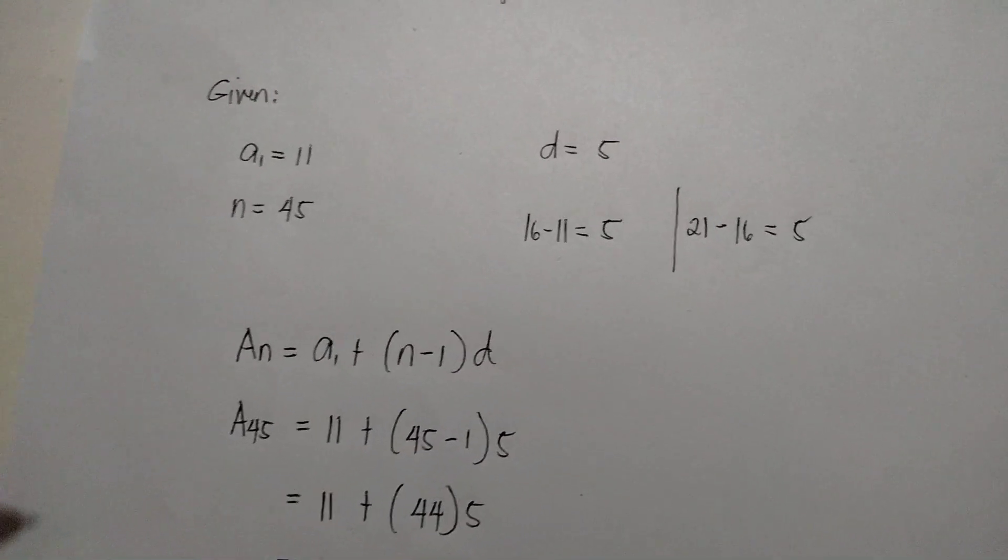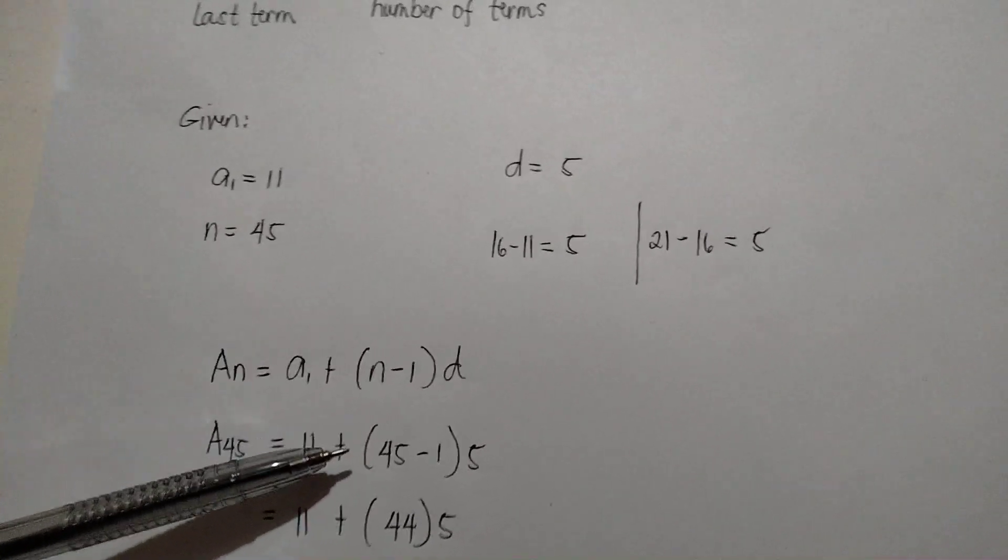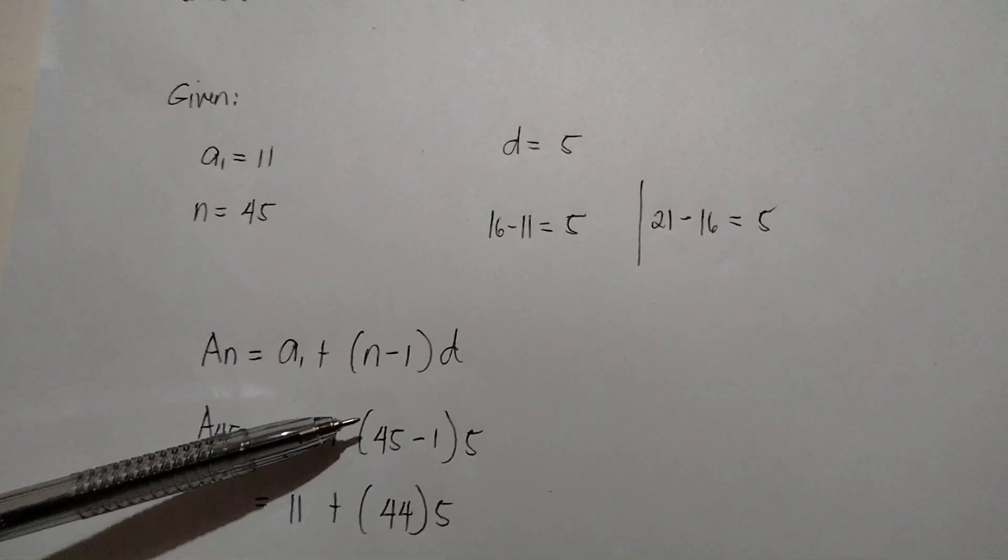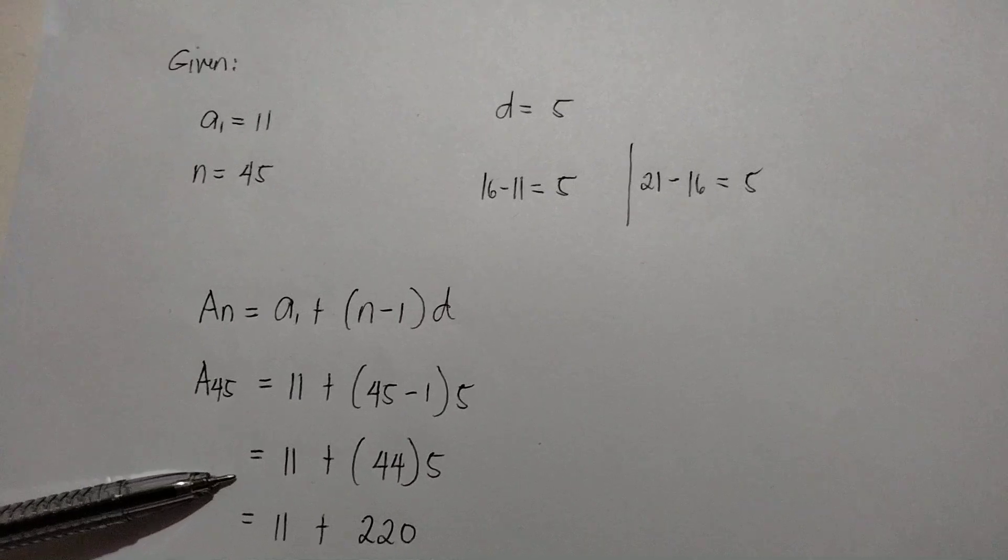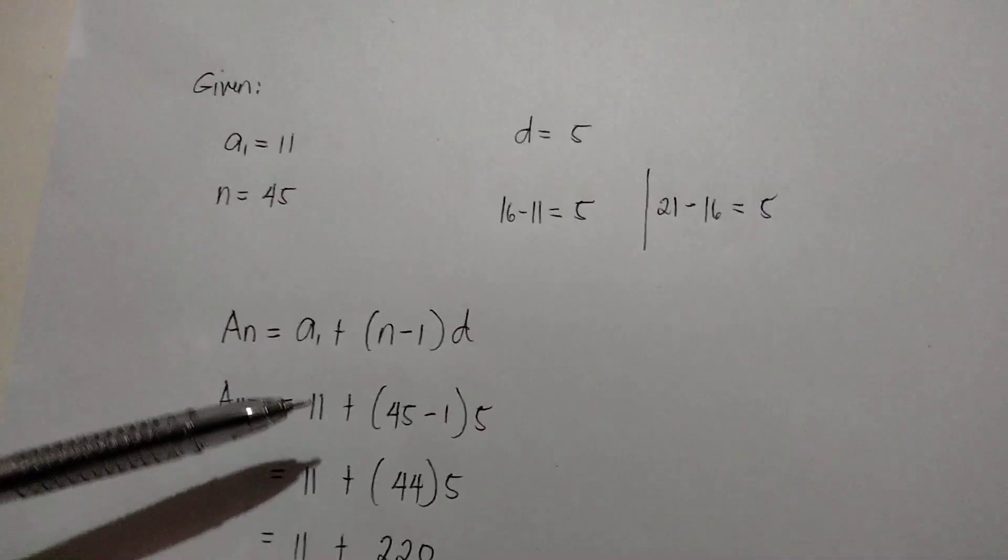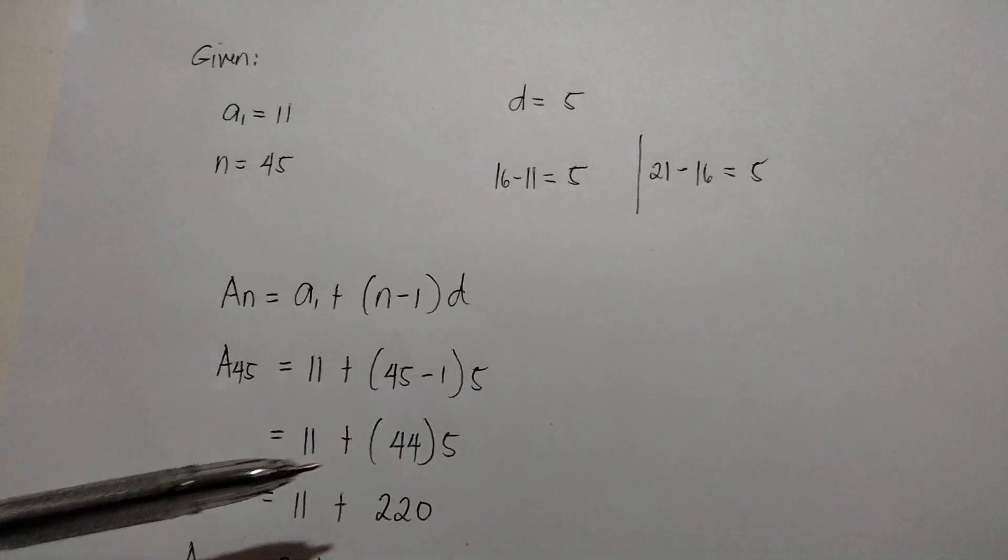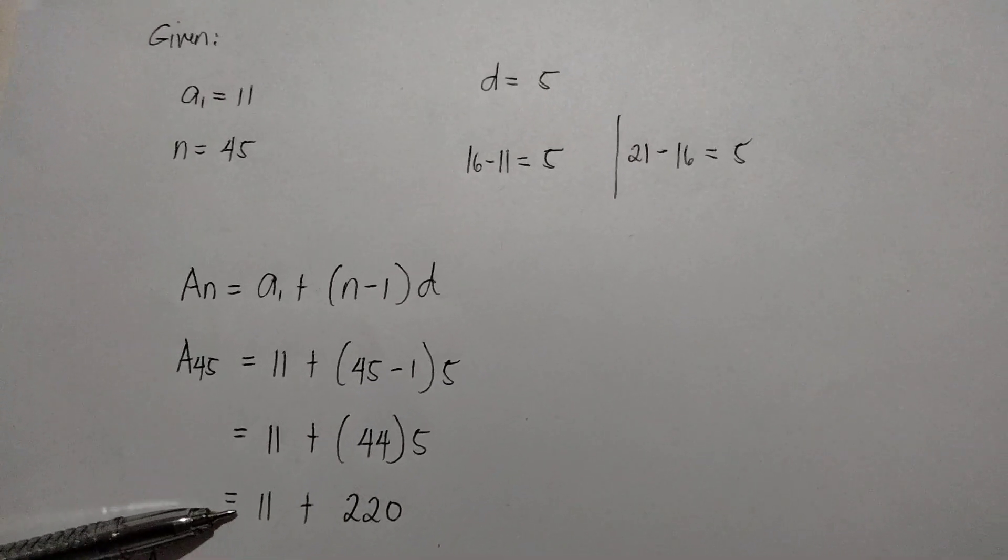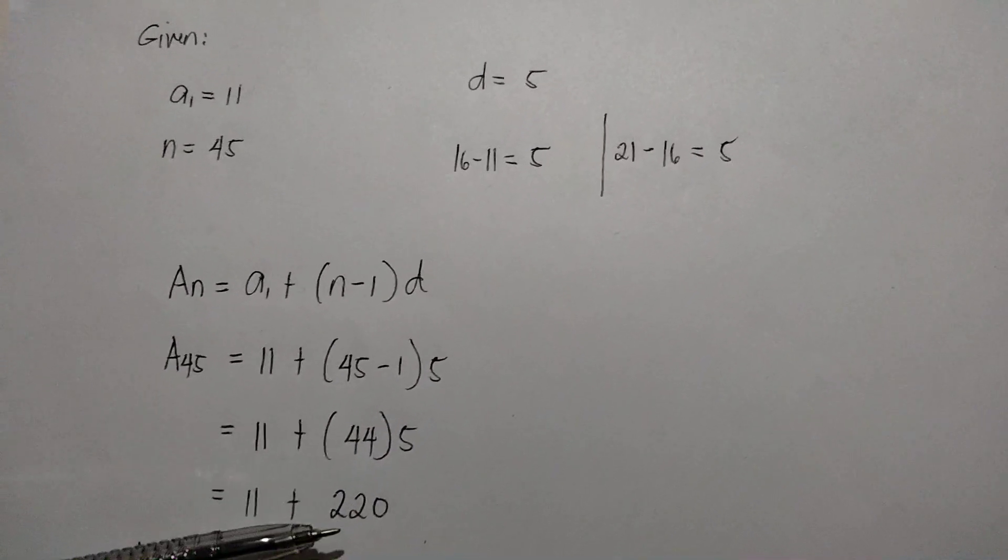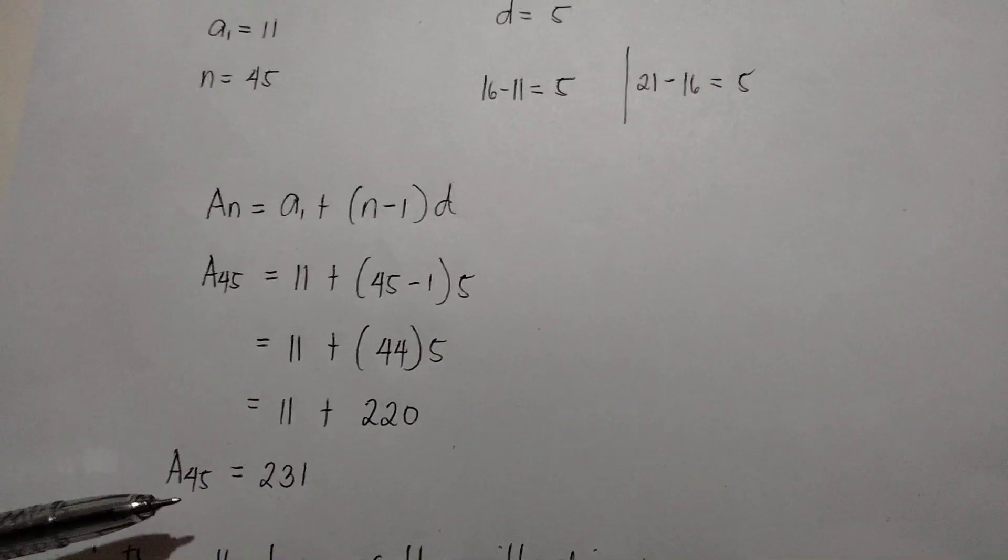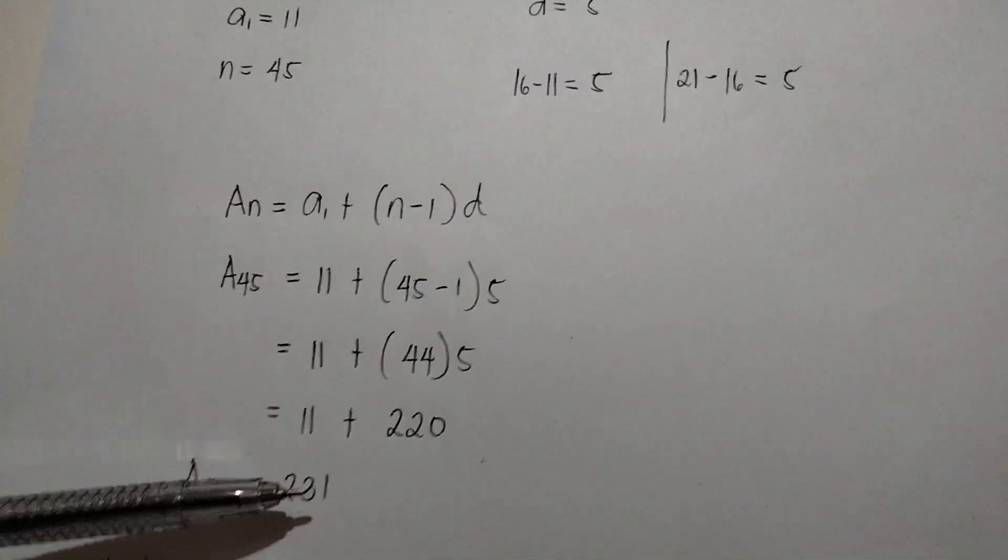Now, let us simplify. a sub 45 equals 11 plus the quantity 45 minus 1 times 5. a sub 45 equals 11 plus 44 times 5. a sub 45 equals 11 plus 220. a sub 45 equals 231.